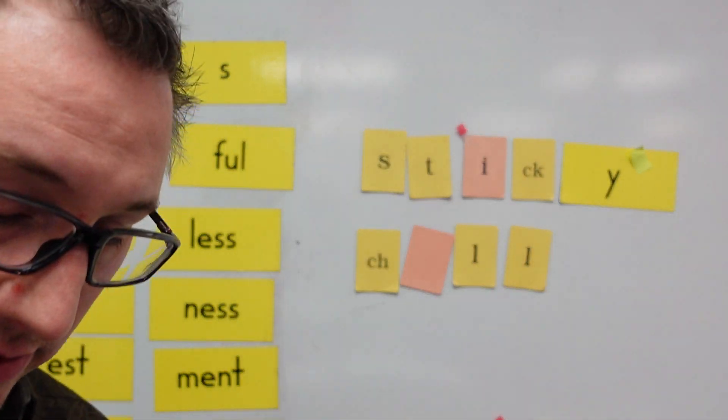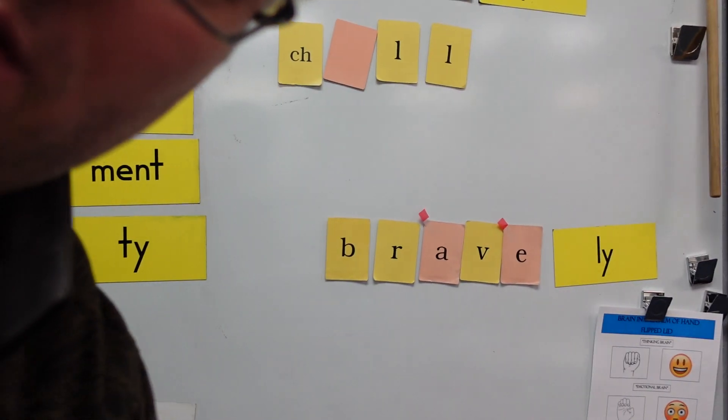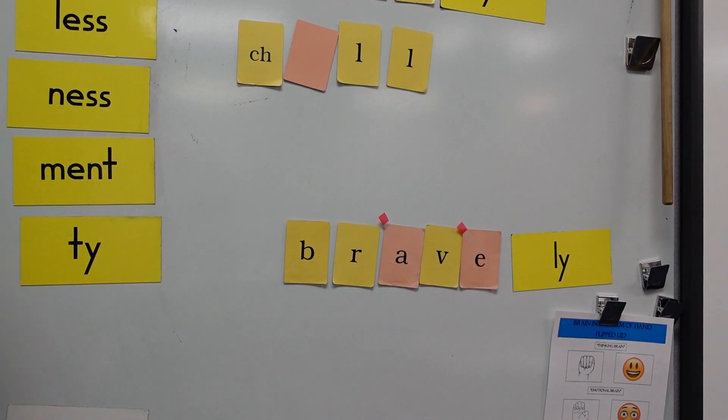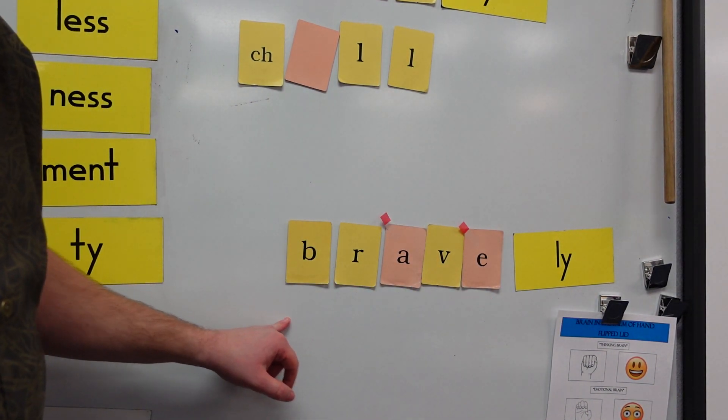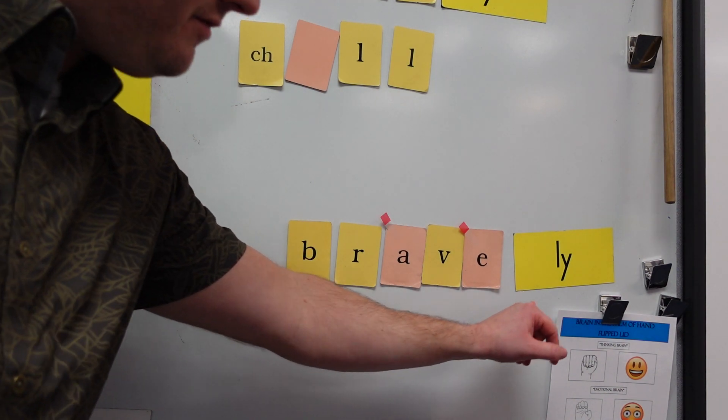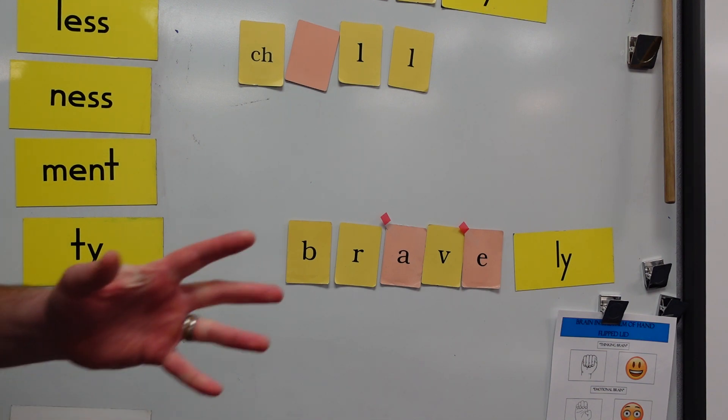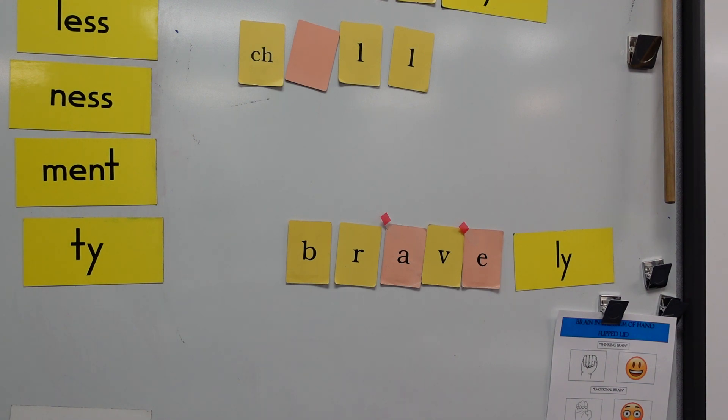And then the last one down here at the bottom. Sorry, I have to move the camera again. The word is bravely. Now, this one is a little bit different. I don't have a marker right in my pocket, but this is a vowel consonant E. Brave is a vowel consonant E word. And if you add L-Y bravely, that means like to do something, like to be brave or to do something bravely.